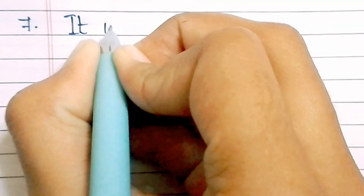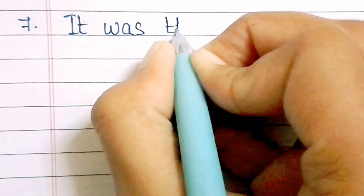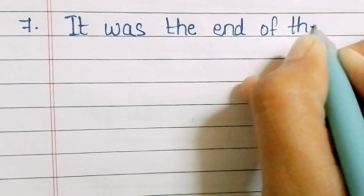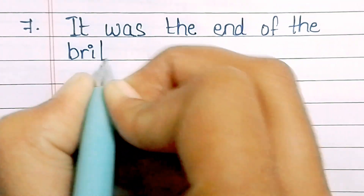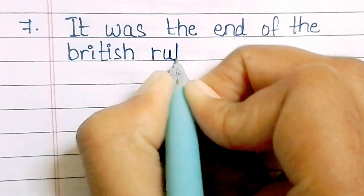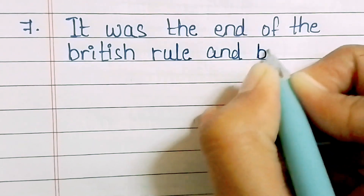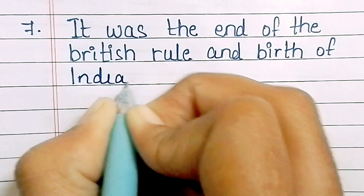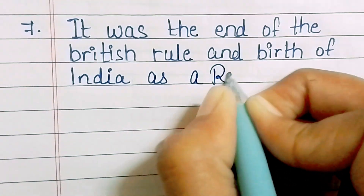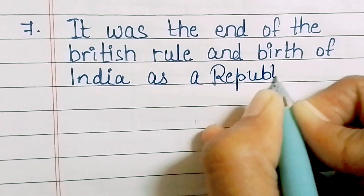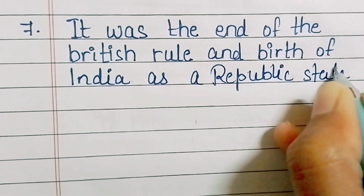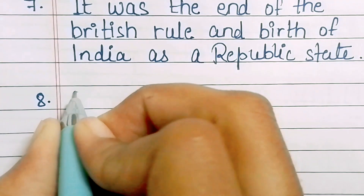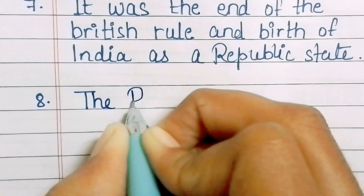It was the end of the British rule and the birth of India as a Republic State. The Republic Day Parade is the big event of this day.